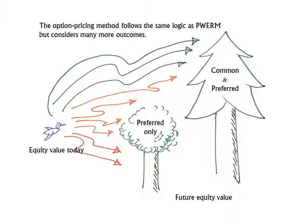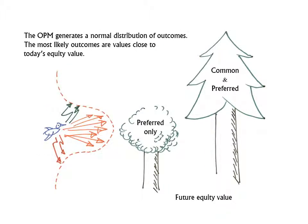Finally, the PWRM and the OPM differ in the way they estimate probabilities. In the probability weighted method, each assessment of probability depends on the appraiser's judgment. In the OPM, the Black-Scholes model determines probabilities. The Black-Scholes model assumes that outcomes are normally distributed. The most likely future values are assumed to be relatively close to the value of the equity today. The model also considers values which are dramatically higher and lower than today's equity values, but the probability of these outcomes is assumed to be very low. As in the PWRM, the value of the common is a function of the probability weighted future outcomes.